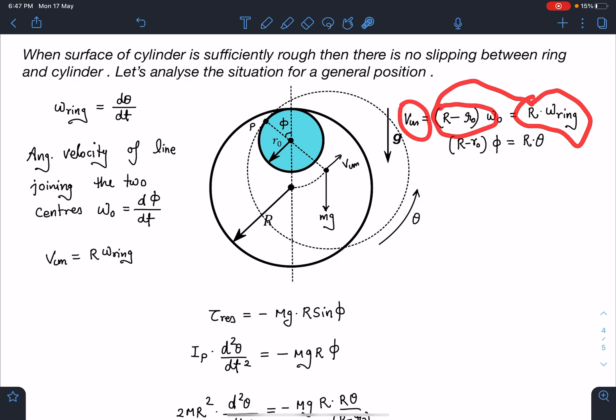So VCM is equal to R ωring. And we know the value of this VCM using the definition of φ. So dφ/dt is ω0. So I can write here the velocity VCM is going to be (R - R0)ω0. Now ω0 is dφ/dt and this is dθ/dt. So I can find the relation between θ and φ, which is very useful. And majority of the students will make mistake because they don't use this relation here. So (R - R0)φ = Rθ.